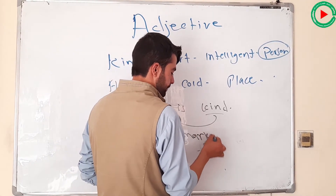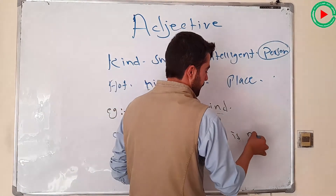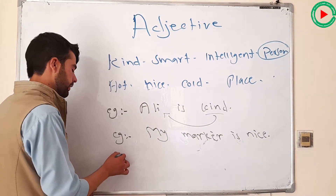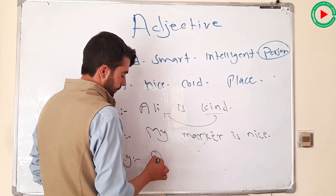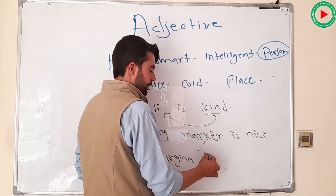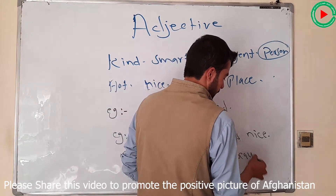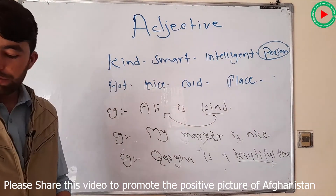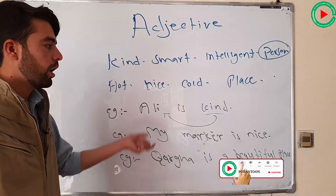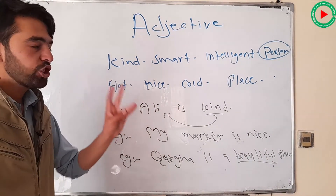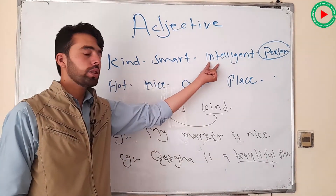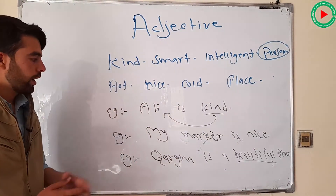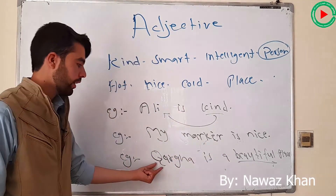My marker is nice — quality of a thing. Next example about place: Karga is a beautiful place. Karga is a beautiful place — adjective of quality, because it shows the quality of a place. Kind, smart, intelligent, hard, nice, cold, warm — and so on.